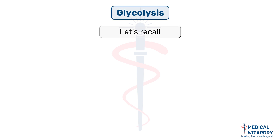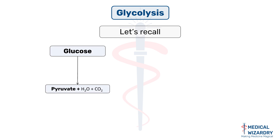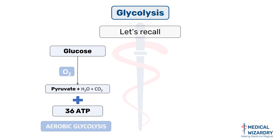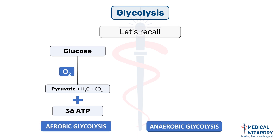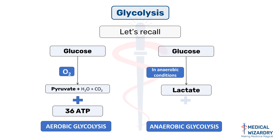Before going to the topic proper, let us recall glycolysis from first year. Glycolysis is the process of the breakdown of glucose to pyruvate. While doing so, it produces energy in the form of 36 ATP. All this happens in the presence of O2. Under anaerobic conditions, one molecule of glucose is converted to lactate and 2 ATP.